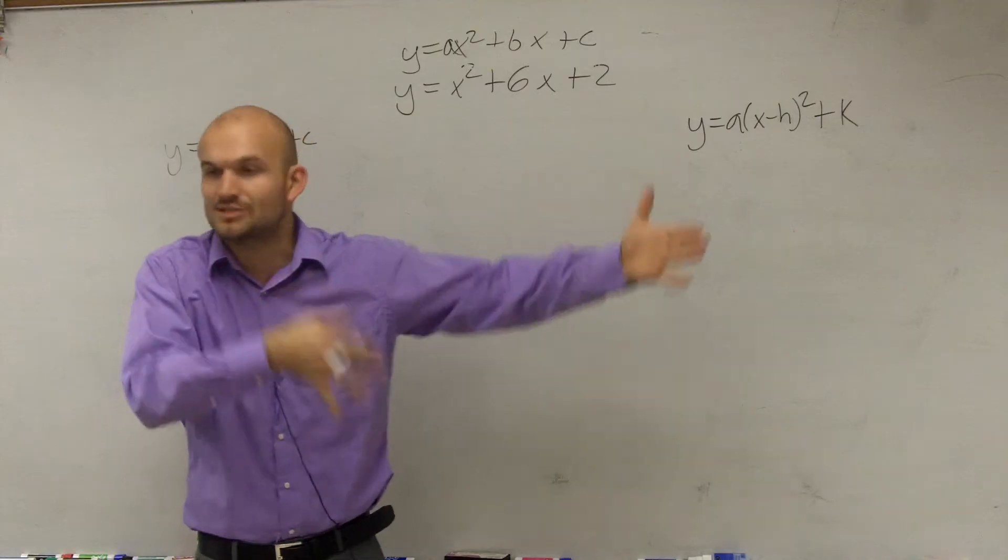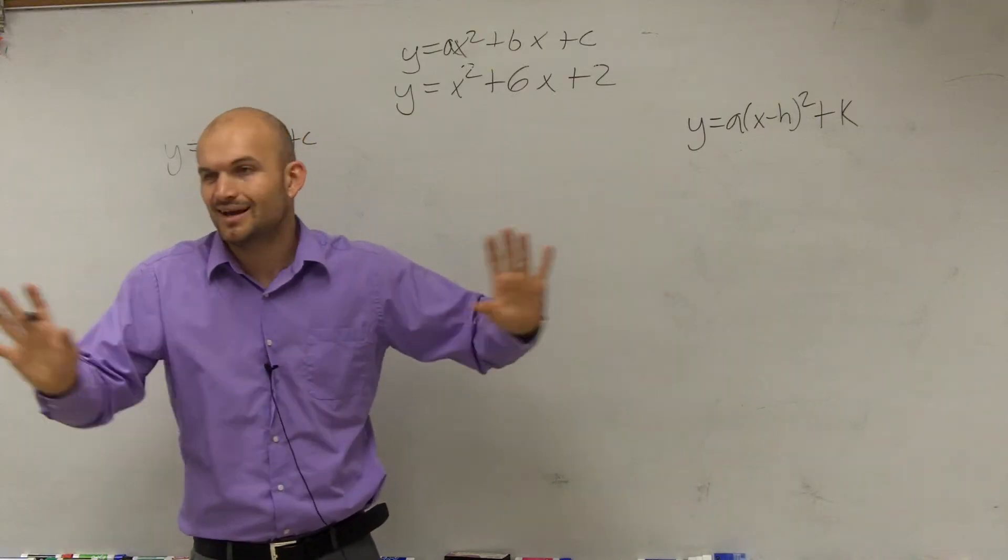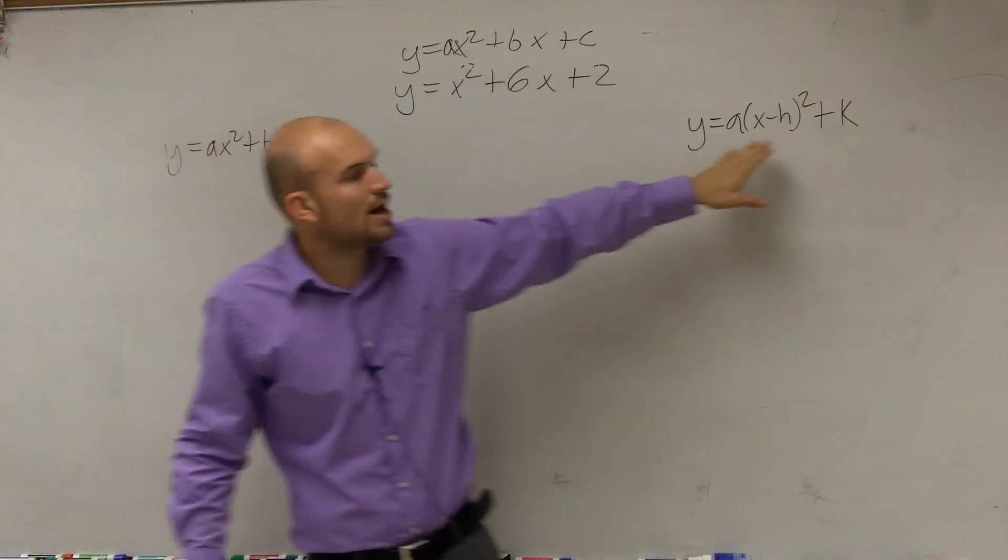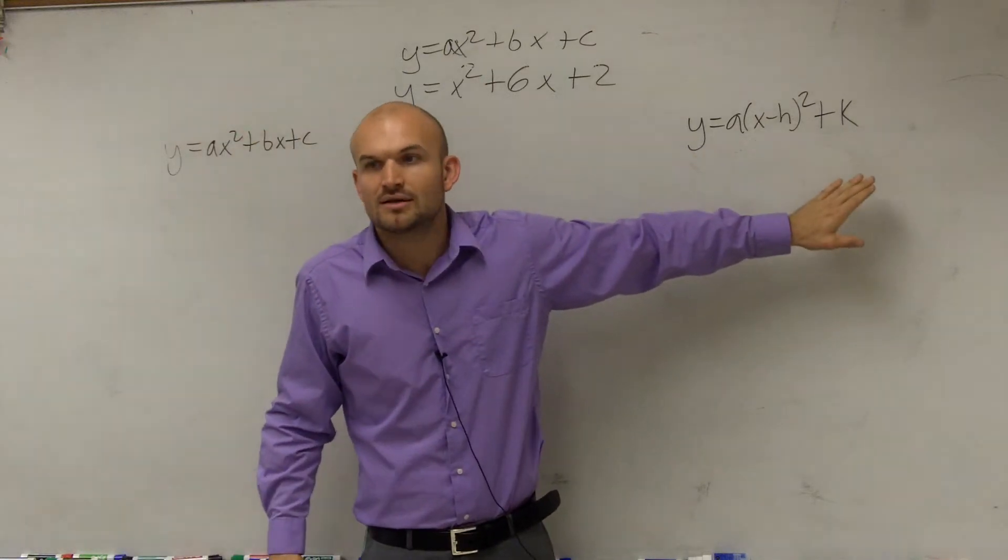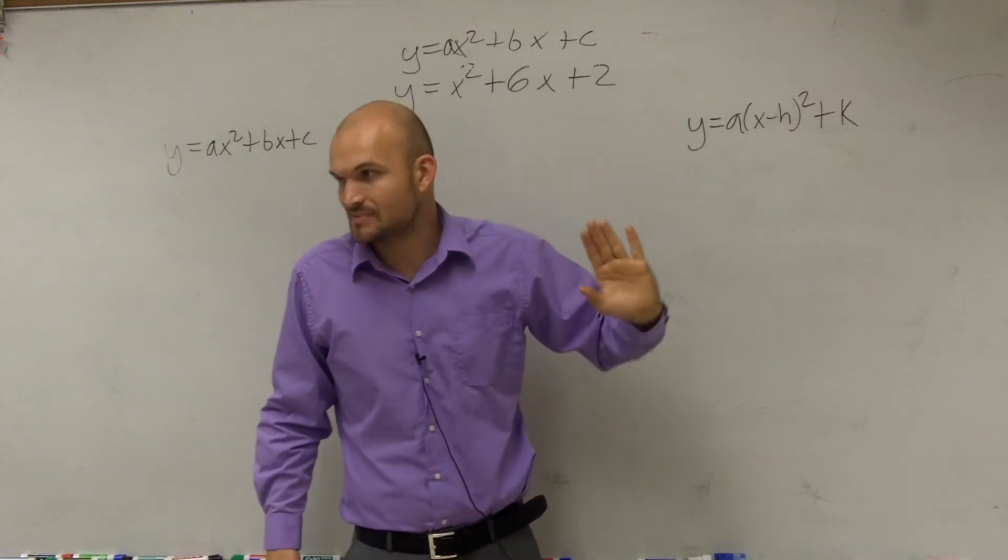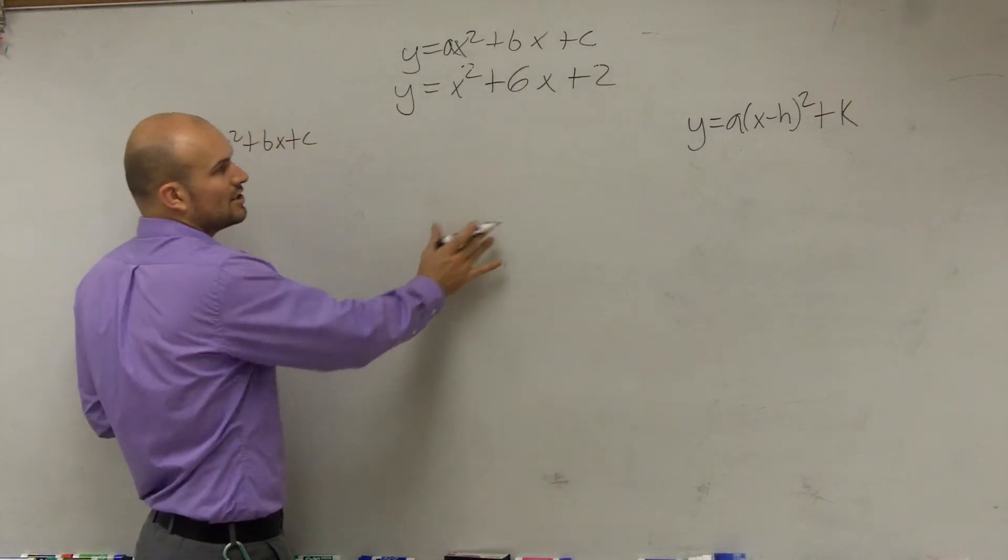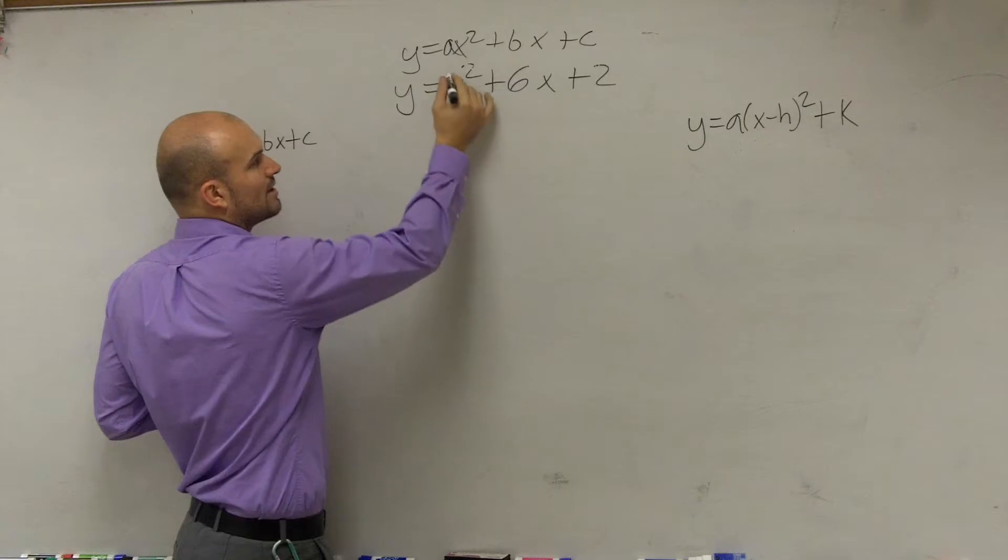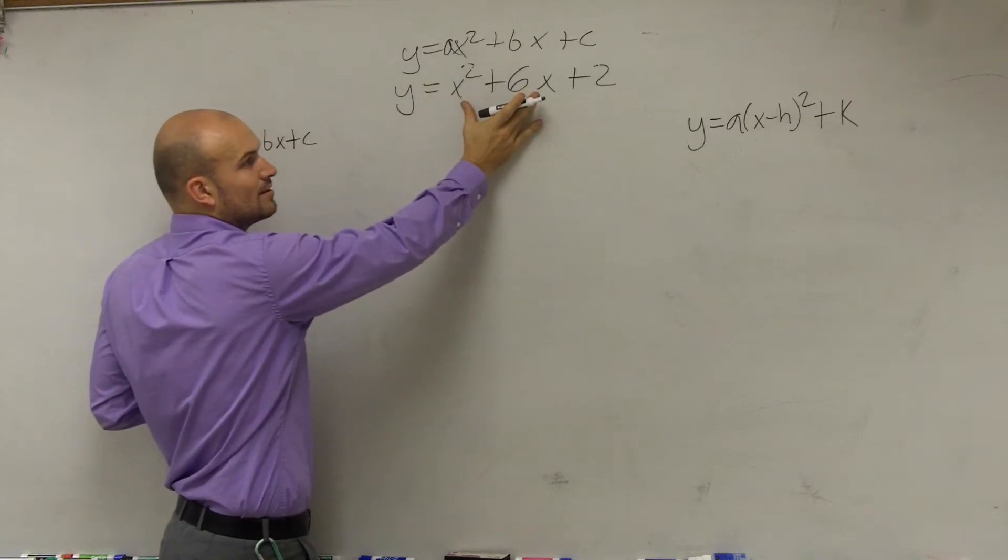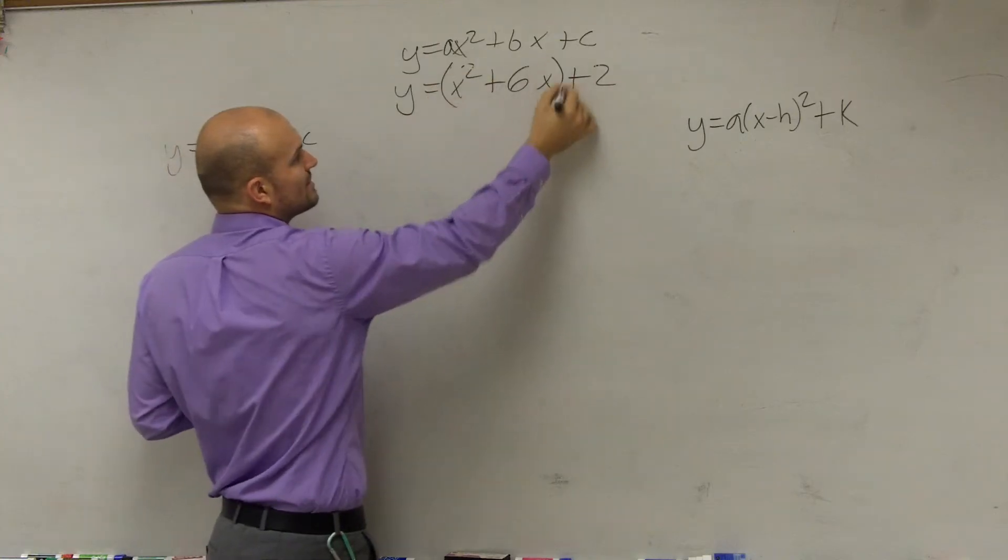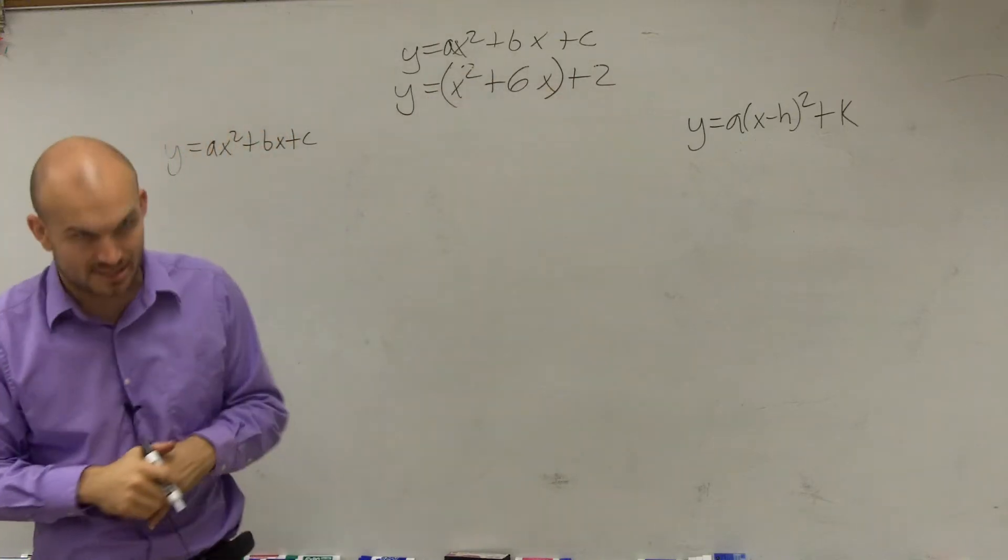Now, remember, before I always said, oh, get that to the other side, right, to solve. And that's fine. But what we're going to do now, we don't have to get it to the other side. We want everything to be on the same side, right? So now I'm going to leave it on the same side. Just kind of watch what I do. So the first thing we're going to do is, remember, I want to make this a perfect square. So since I'm not dealing with this 2, I'm going to put parentheses around the x squared plus 6x.